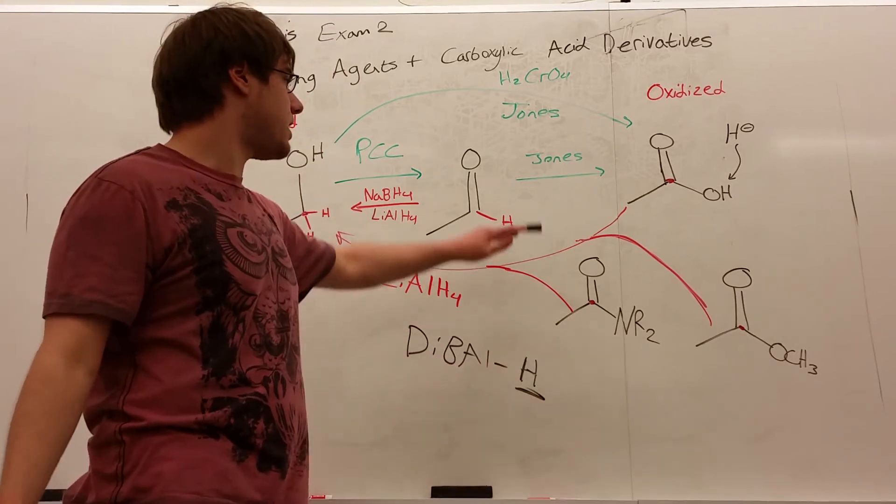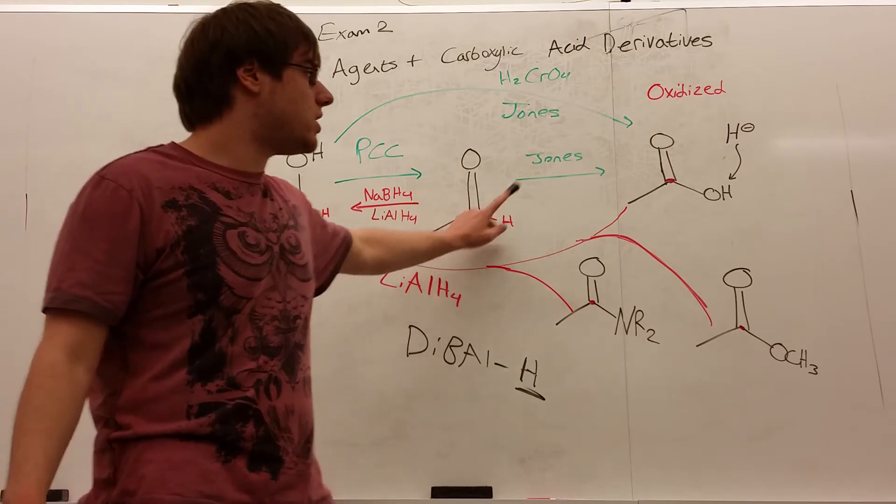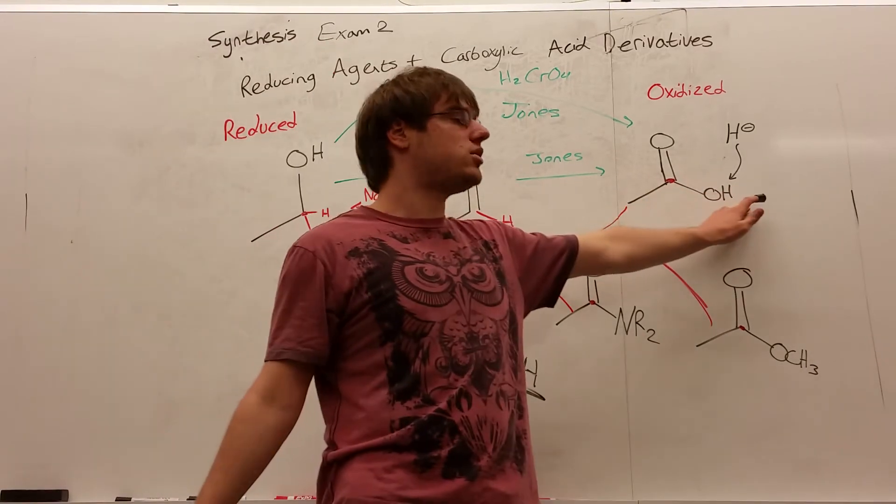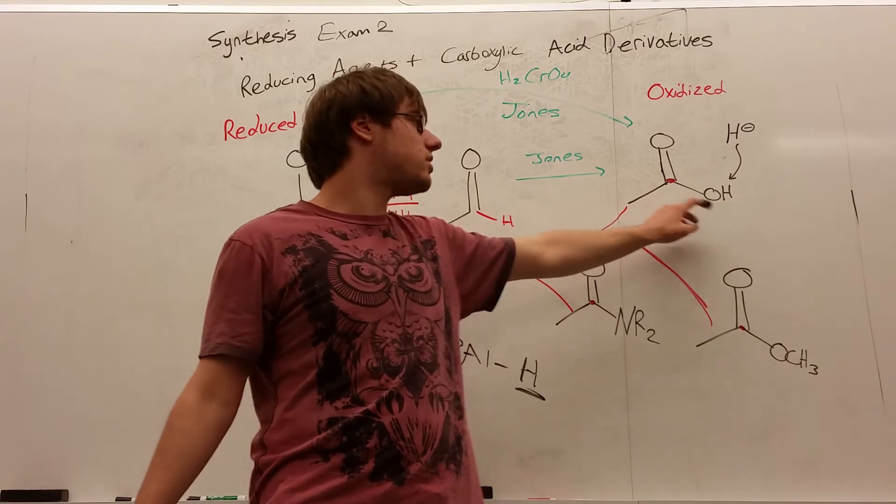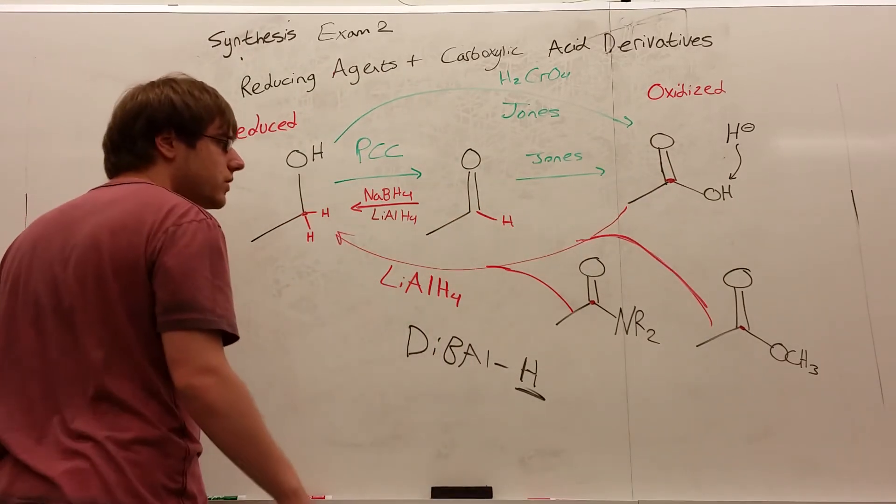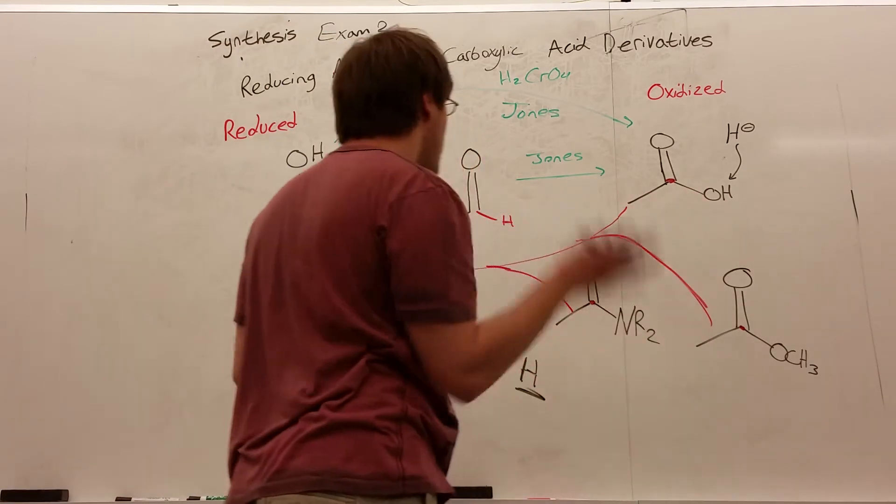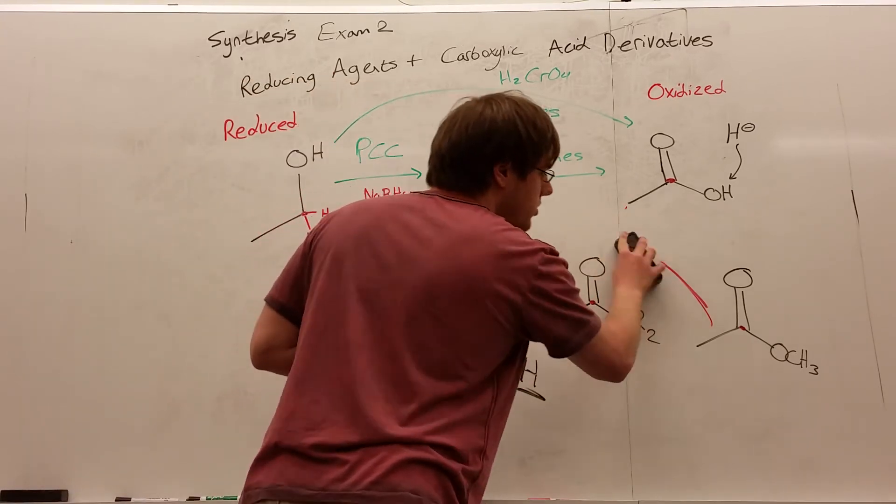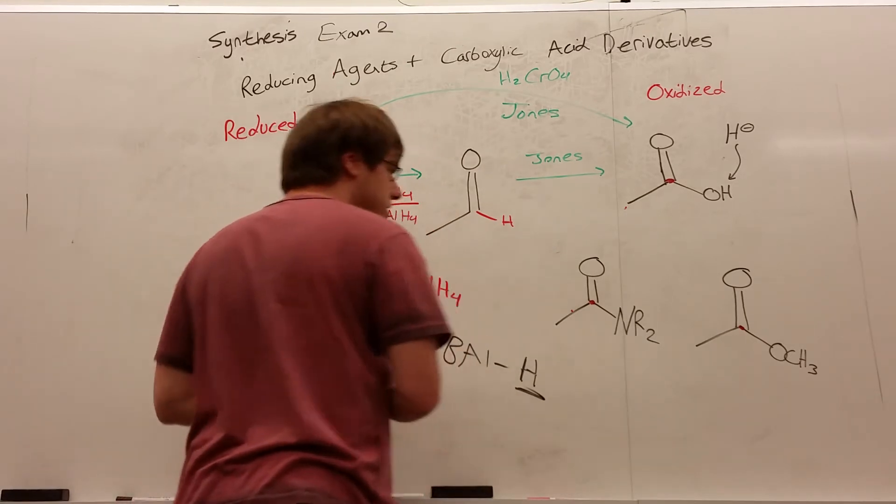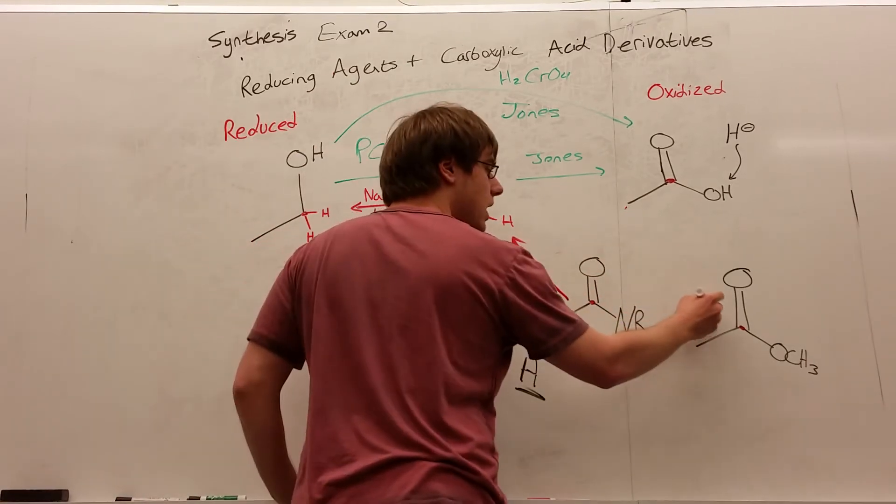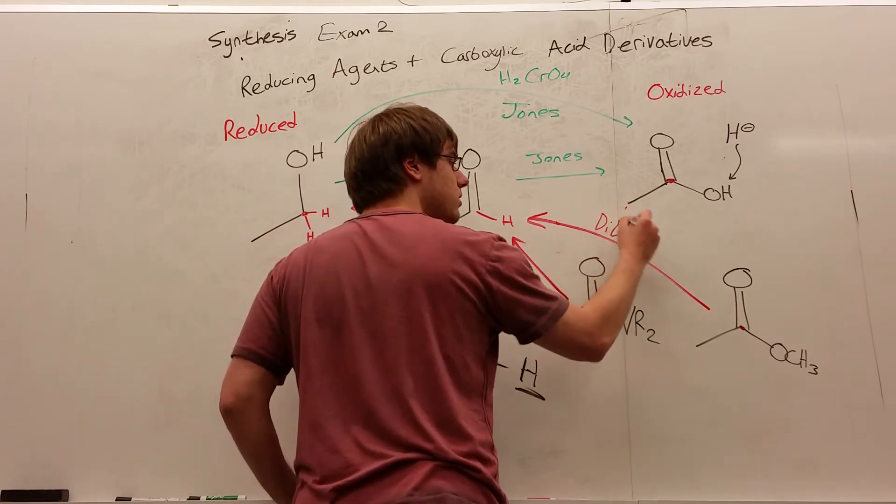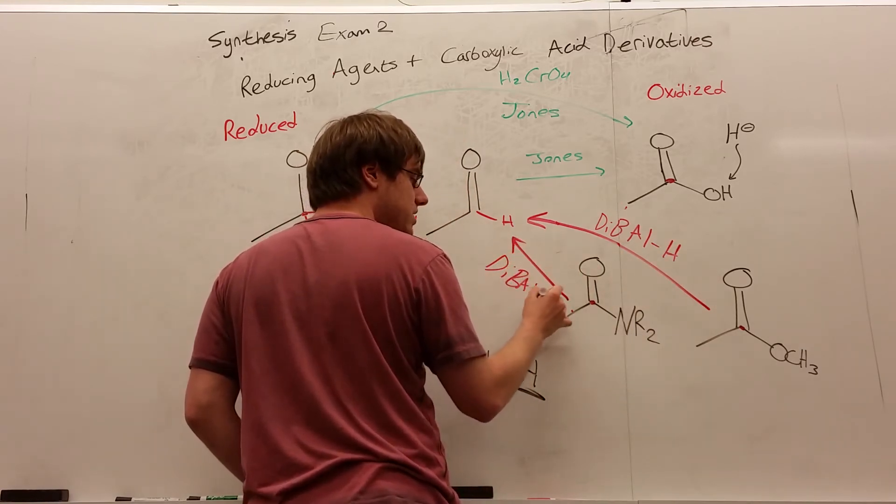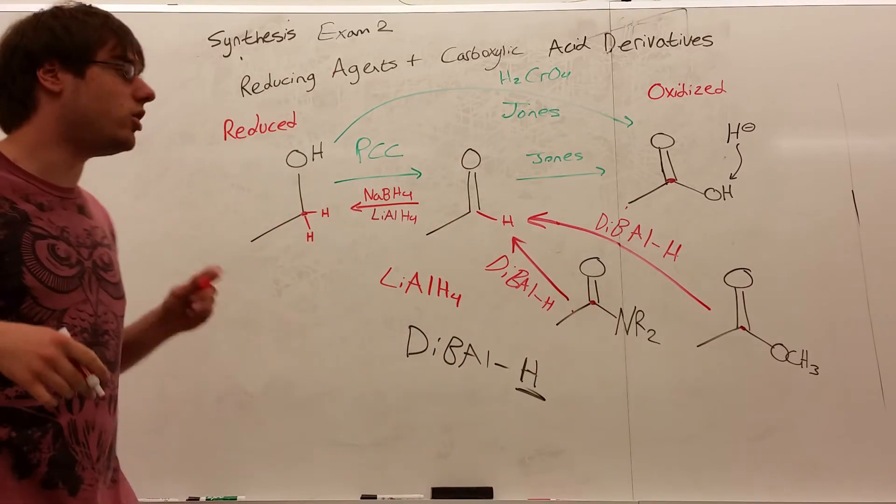So DiBALH cannot turn carboxylic acid into an aldehyde, because if it only has one hydrogen to give, it can only give it to that acidic proton. Whereas LiAlH4, because that is four, even if that hydrogen does get pulled off, you still have a bunch more hydrogens that can go about reducing the structure down the way. So DiBALH can't react with carboxylic acid, but it can react with its derivatives. So I'm going to erase this arrow now, just so I have space. So what DiBALH will do is it will convert these amines and the esters into an aldehyde. And basically anything that DiBALH touches other than carboxylic acid will become an aldehyde.